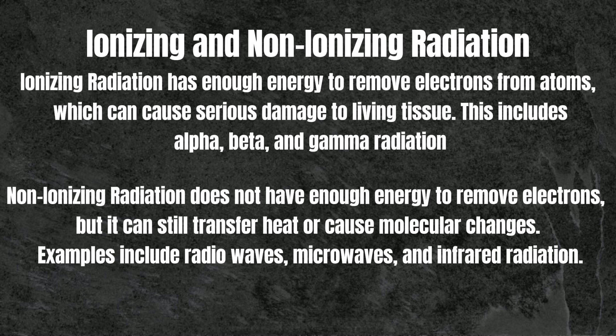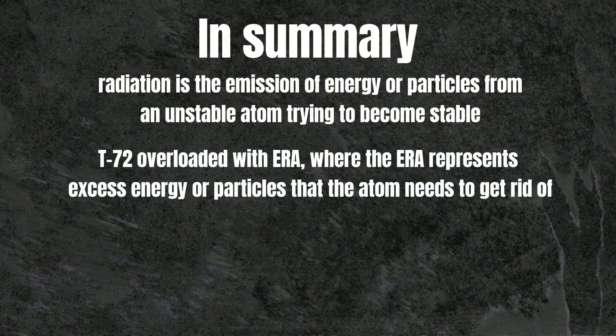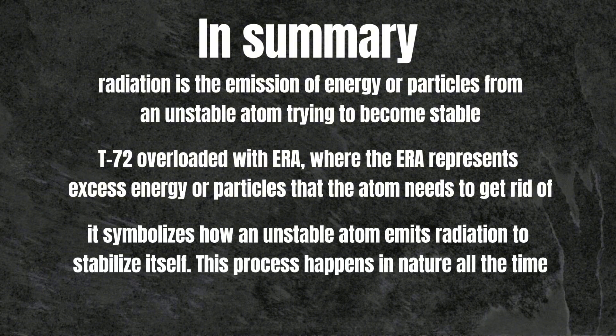I will explain these types of radiation in more detail in a future video. In summary, in simple terms, radiation is the emission of energy or particles from an unstable atom trying to become stable. We can visualize this with a T-72 overloaded with ERA, where the ERA represents excess energy or particles that the atom needs to get rid of. When these ERA plates fly off, it symbolizes how an unstable atom emits radiation to stabilize itself. This process happens in nature all the time, whether in radioactive elements, nuclear reactions, or even inside the sun.